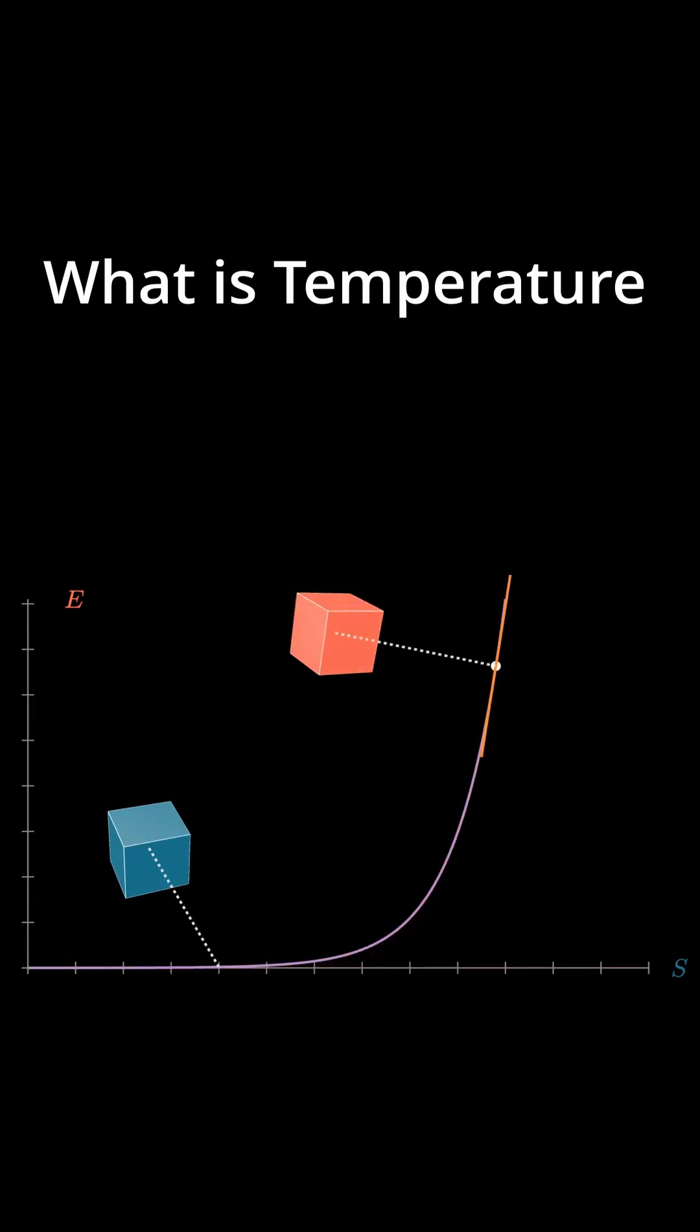But at higher energies, the tangent line looks more vertical. We have hot crystals.